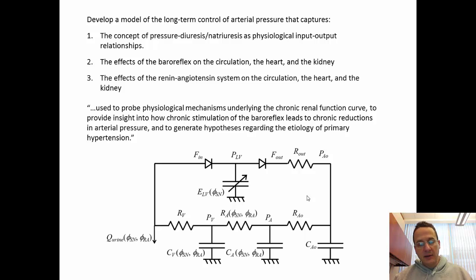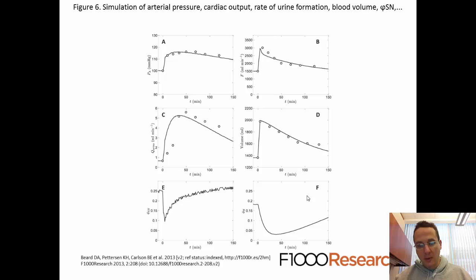So that's the baroreceptor. We put all these things together, including other components which you can read about in the manuscript. And we have a model to simulate blood pressure control over the long term. We can simulate this for many minutes up to hours. And here's an example of simulating an experiment where blood was injected into an animal and the blood volume in the animal was actually increased a tremendous amount, about a 50% increase in blood volume. And what happens when you do that is you get a relatively small increase in pressure of about 10 to 15 millimeters of mercury.